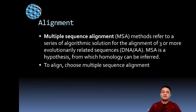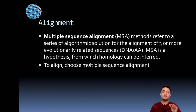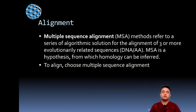In the previous video we saw multiple sequence alignment — downloading sequences from a BLAST search, performing a multiple sequence alignment, and identifying unique polymorphisms by manually auditing the base scores. Multiple sequence alignment is a method referring to a series of algorithmic solutions for alignment of three or more evolutionarily related sequences, which can be DNA or protein (amino acid) sequences.